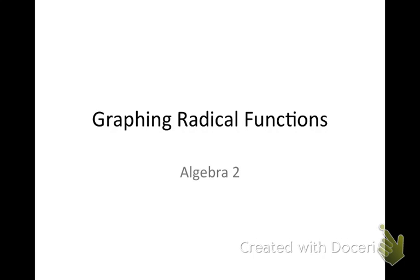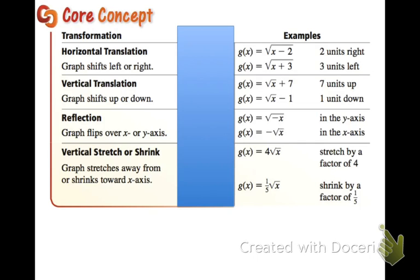Graphing Radical Functions Part 2. In this video we're going to focus on reflections and vertical stretch or shrink. Reflections happen with negative signs. If you have a negative on the inside of your radical, it will be a reflection across the y-axis. If you have a negative on the outside of your radical, it will be a reflection across the x-axis.